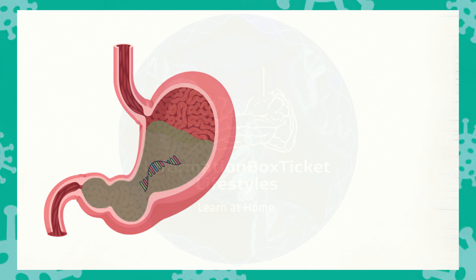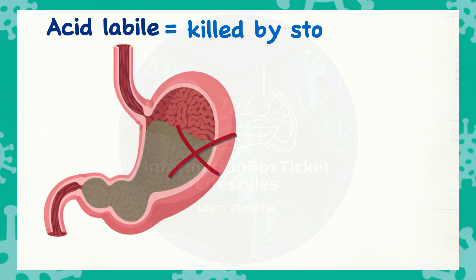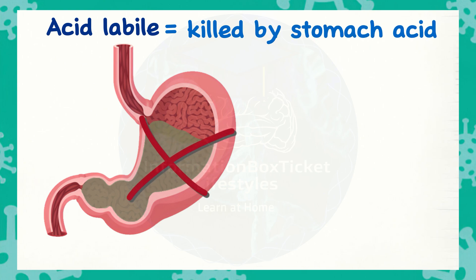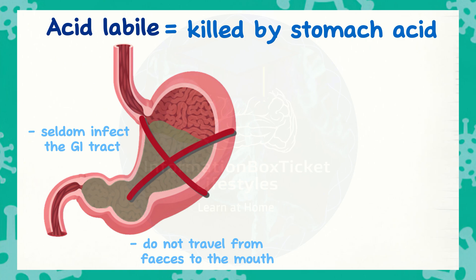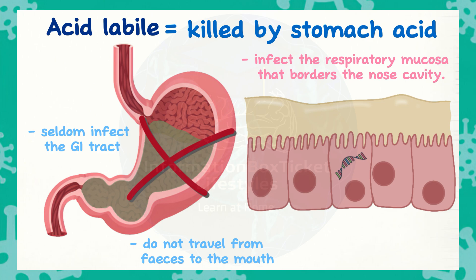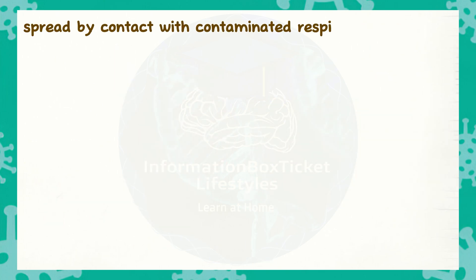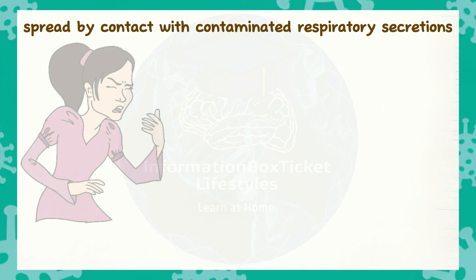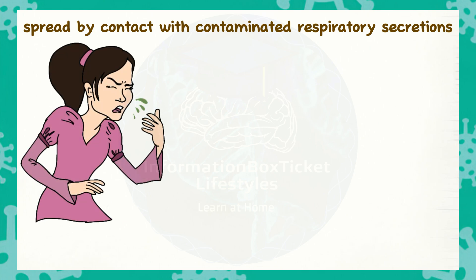Rhinoviruses, unlike other picornaviruses, are acid-labile. Because they may be killed by stomach acid, they seldom infect the GI tract and do not travel from feces to the mouth. Rhinoviruses are known to infect the respiratory mucosa that borders the nasal cavity. As a result, rhinovirus spreads by contact with contaminated respiratory secretions, such as mucus and aerosols, particularly those produced by nose-blowing or sneezing.